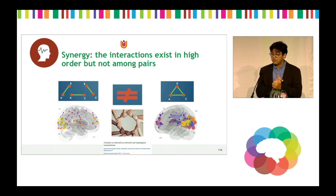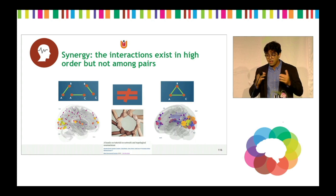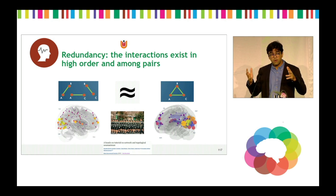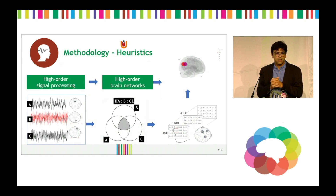There are different types of interactions to consider. Some are synergistic — they only exist among the group as a whole. Like people holding hands in a circle: you can only see the shape if you see all the interactions together. Other interactions are more redundant — if you see two people marching, you can guess the whole group is marching. So sometimes interactions can be approximated from pairs, and sometimes they cannot. We try to process the signal to infer both types of interactions in the brain.